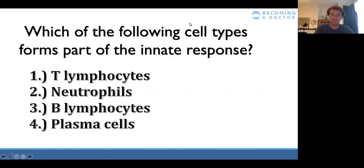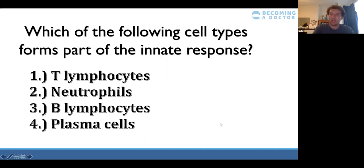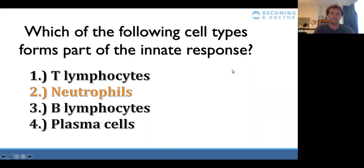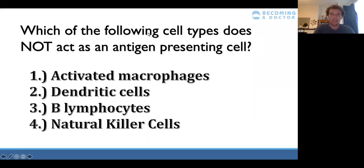Let's go through some quick questions to check understanding. The first poll question confirms that neutrophils — along with macrophages — are the very first cell type to respond to infection, and therefore must be part of the innate immune response.